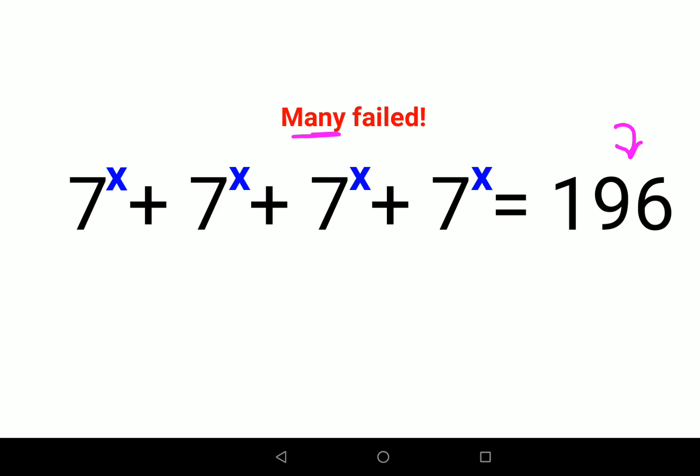First, see how many 7^x we have: 7^x + 7^x + 7^x + 7^x. So we have literally four 7^x, so I can take 7^x common and multiply it with 4. And this will become 4(7^x) = 196.